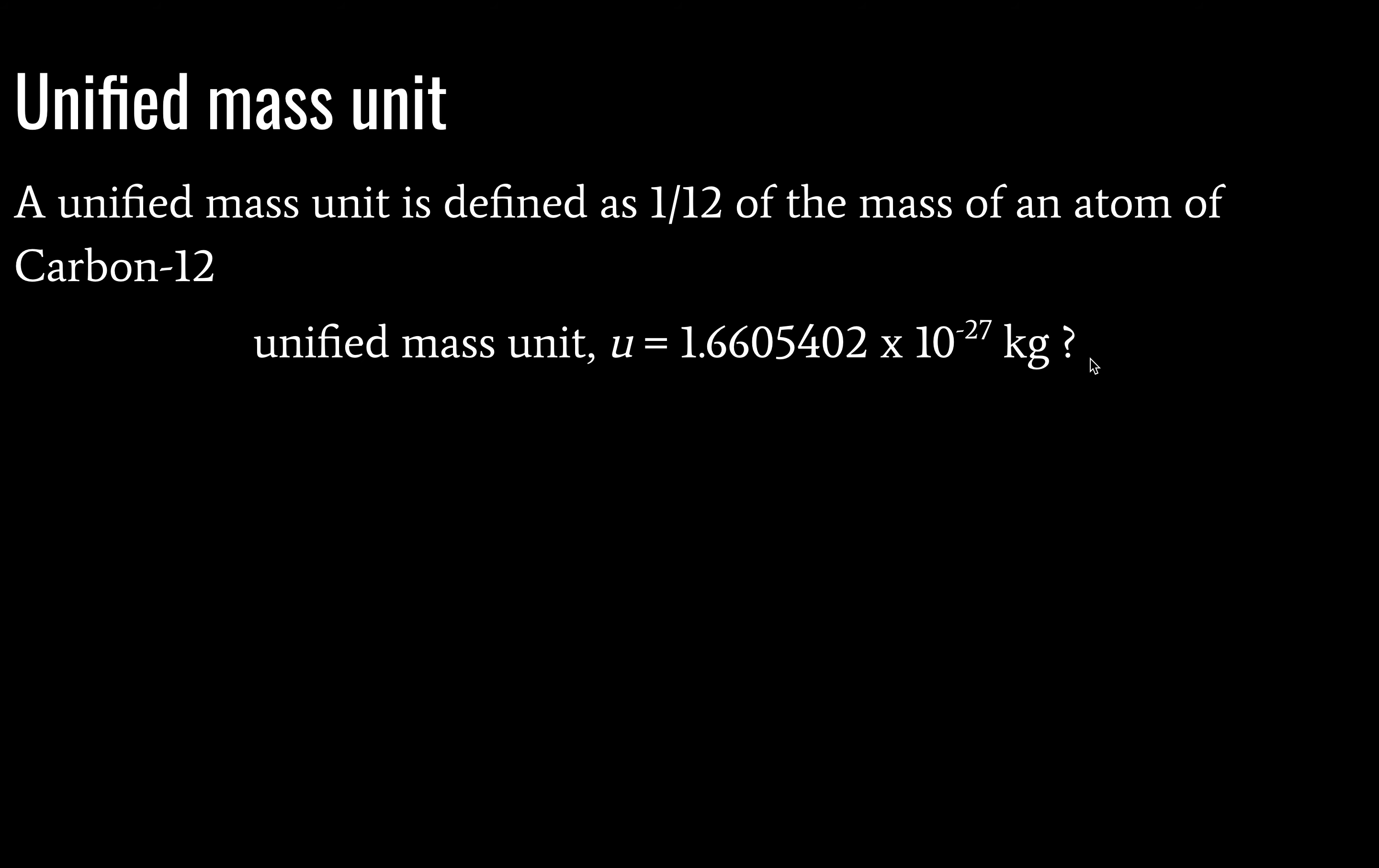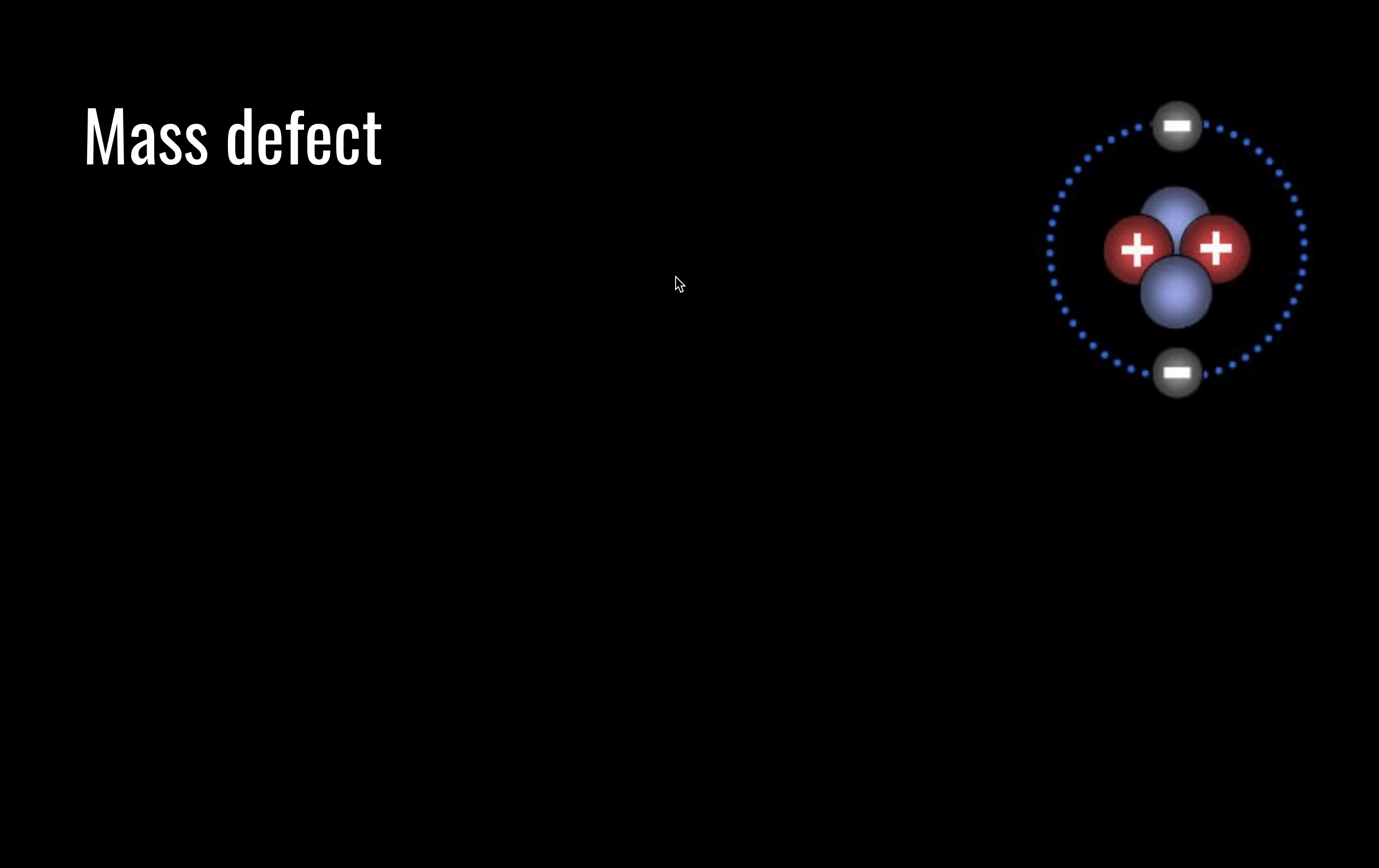Because in 2019, we changed the unified mass unit. So the current value looks like this. It has more significant figures. These are tentative. But neither of these really matter for IB physics purposes because your data booklet gives it as this value. We have changed the value of the unified mass unit in recent history. It's no longer based on one twelfth of mass of an atom of carbon-12, but just for historical purposes, you should know this.